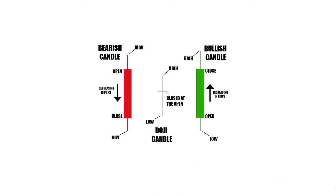I want you to really understand time frames so we can break down what is happening on a candlestick graph and understand how to properly read the information. Breaking down candlestick charts is actually relatively simple. Looking at this diagram, there are three types of candles: the bearish candle, the bullish candle, and the doji candle.